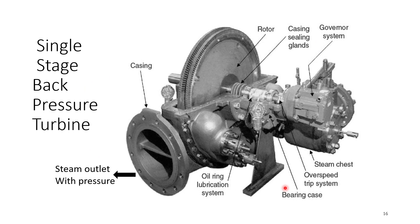In a single-stage back pressure steam turbine, the steam enters from one side, passes through two wheels — basically the Curtis wheel impulse wheel — and then exits. The turbine has a casing, governing system, steam chest, over-speed trip, bearing, and base, all of which will be discussed in the steam turbine components section.